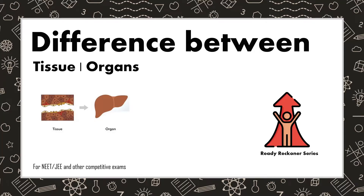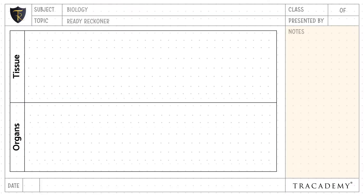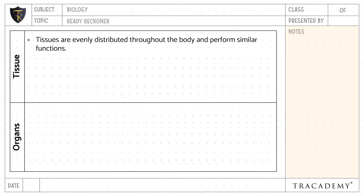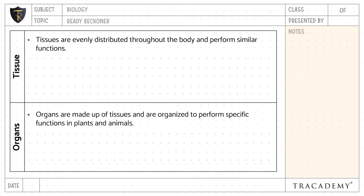In this video, let's understand the difference between tissue and organ. Tissues are evenly distributed throughout the body and perform similar functions, whereas organs are made up of tissues and are organized to perform specific functions in plants and animals.